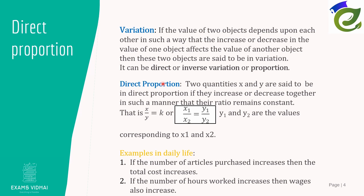Let's see what direct proportion is. If the ratio of two quantities x and y is a constant, which means x = k × y where k is a constant, then if you increase x, y will also increase, and if you decrease x, y will decrease. When one increases and the other also increases, the two values are said to be in direct proportion.